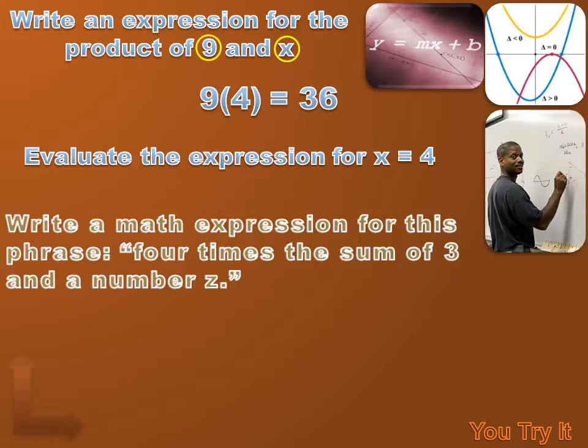Here's another example. Write a math expression for this phrase. 4 times the sum of 3 and a number Z. Well, I'm going to circle the numbers. 4, 3, and Z. And I'm pretty sure that a 4, a 3, and a Z will end up in my answer to this problem. Now, I've just got to figure out how am I going to combine those, the 4, the 3, and the Z. Am I going to use plus signs, minus signs, multiply signs, equal signs? What mathematical symbols am I going to use to combine those numbers? Well, it says 4 times, 4 times. That's, I've got to put in a time sign. 4 times. And then it says the sum of 3 and a number Z. So, that's 3 plus Z.